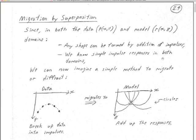Here's another simple migration. We're on Notes 20, page 24. The migration by superposition points the way to how I actually do most of my migrations. It points the way to handling any velocity variation that there is. It's like — all that work we did in the FK migrations, basically figuring out how to do downward continuation — migration by superposition says forget that.